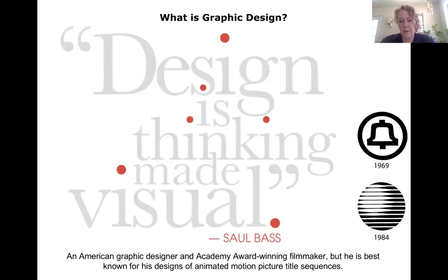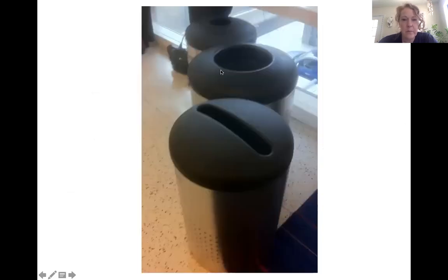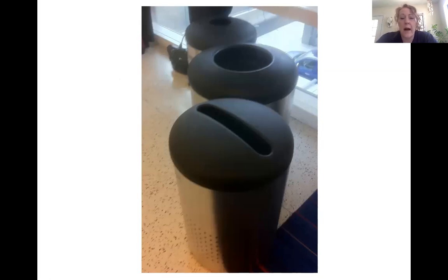Saul Bass's definition of graphic design was that design is thinking made visual, which is a true statement. He was a famous graphic designer and filmmaker, more known for his animation motion picture title sequences. He came up with the Bell Systems logo in 1969 as well as the AT&T logo in 1984 as it was revised. Strong design — you don't have to think about it. You don't have to think about how it's getting its message across; you basically are reading the message with no effort whatsoever. These receptacles are a perfect example — they don't have a label on them, but we don't have to think about where stuff goes. We know one is for recycled cans or bottles, one is for general trash and discard, and another one is for paper.